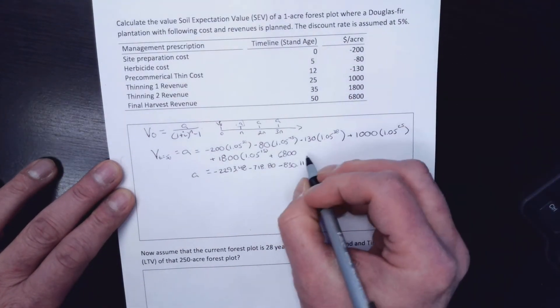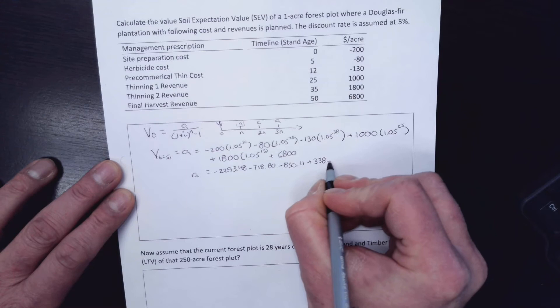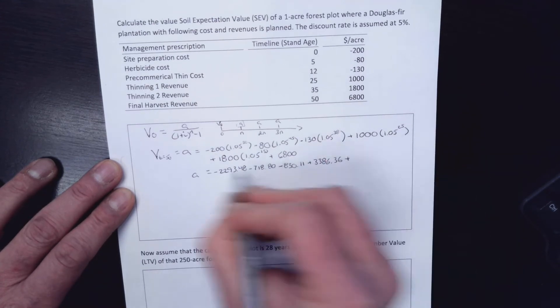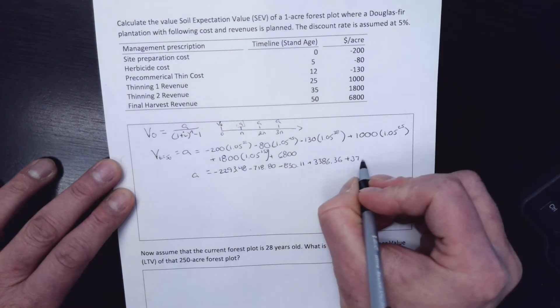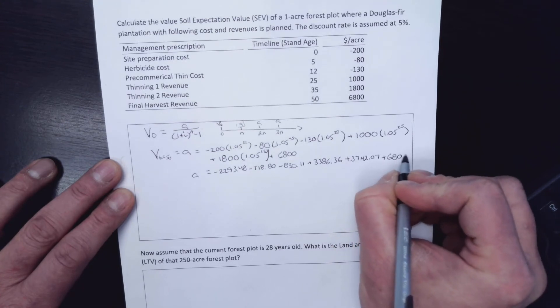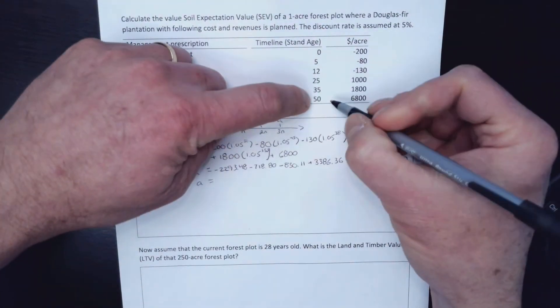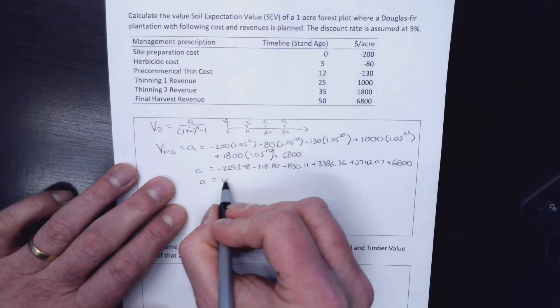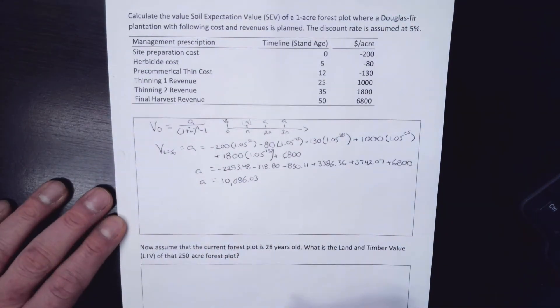So I'm going to add on this $1,000 now that I've moved out 25 years and it is $3386.36. Adding on the last, this 15 years, I had to move out this $1,800. Let's put the bracket down there. And we get $3742.07 and then that's $6800. That's my A. So if I add all those together, I can do that because now I have them all out at year 50. So once I get them to year 50, I can just add them together and I have this $10,086.03. That's my A.